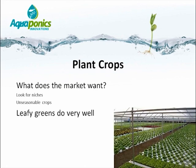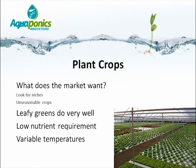Leafy greens do exceptionally well in aquaponics — not only basil, but also lettuce, mint, watercress, rocket, coriander, and so forth. All leafy crops require a fairly low nutrient level, which makes them an easier option to produce. They are also very variable in terms of temperature tolerance. Rocket and basil may prefer a temperature of about 28 degrees, whereas lettuce prefers about 22 degrees.